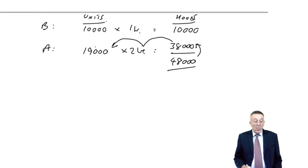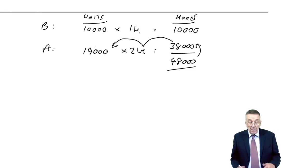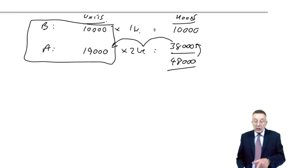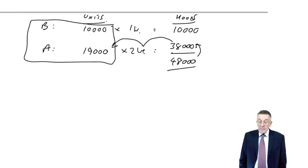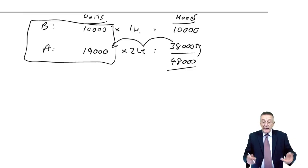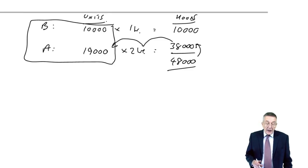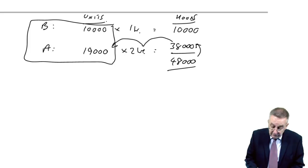And so there is the first bit of the question. It says, what's the optimum production plan? Well, there it is. We'll produce 19,000 A's, 10,000 B's. Now, probably that'll be where it finishes. We've done it, all right? This one does carry on and say, what is the maximum profit?